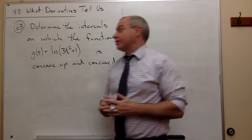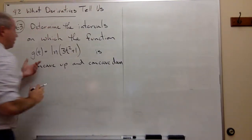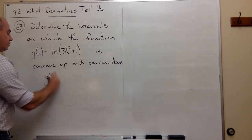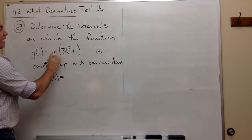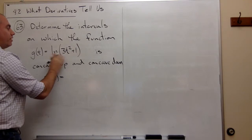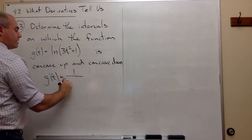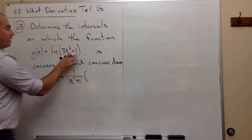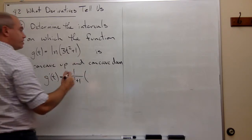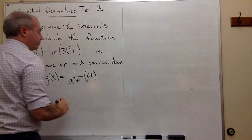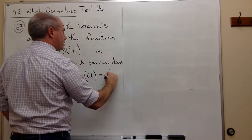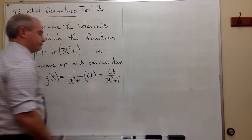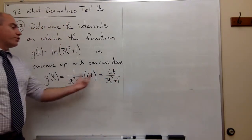Let's find the second derivative. The first derivative, g'(t), is going to equal, well, I have ln of something, so the derivative of ln of something is 1 over what's inside times the derivative of what's inside, which is 6t. If you would prefer to write it this way, that's fine, 6t over 3t² + 1. So that's a first derivative.